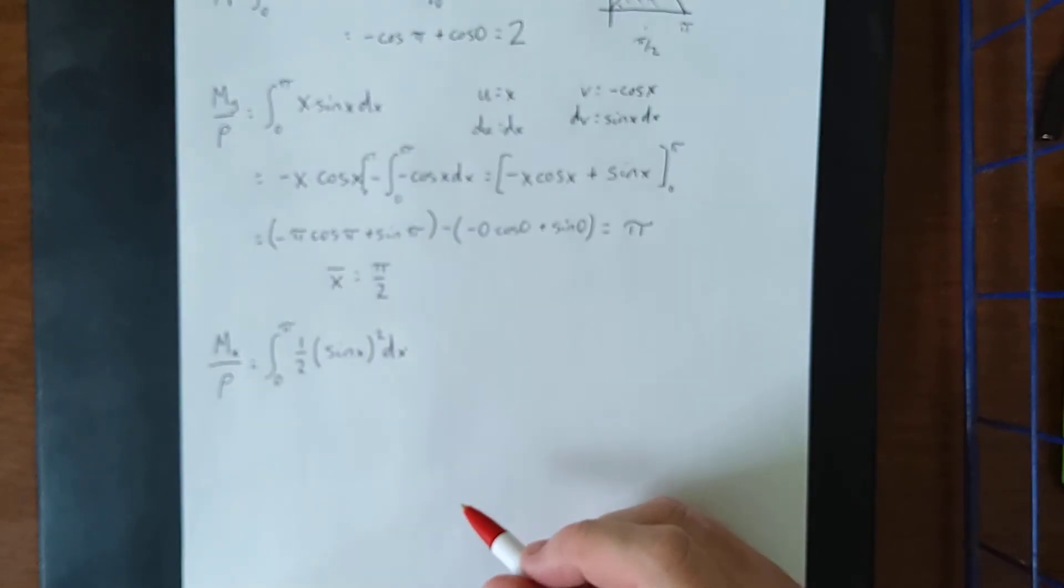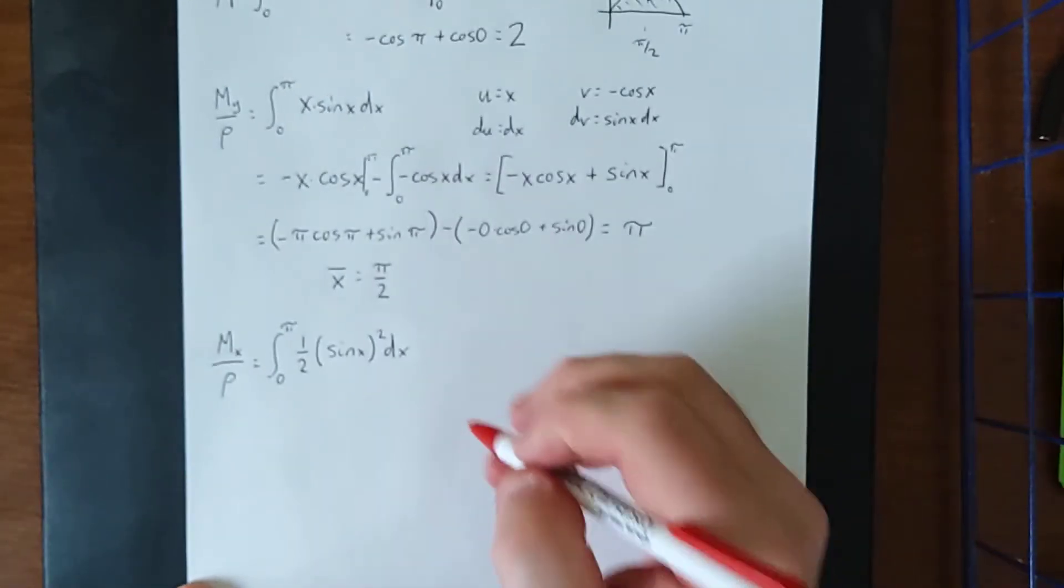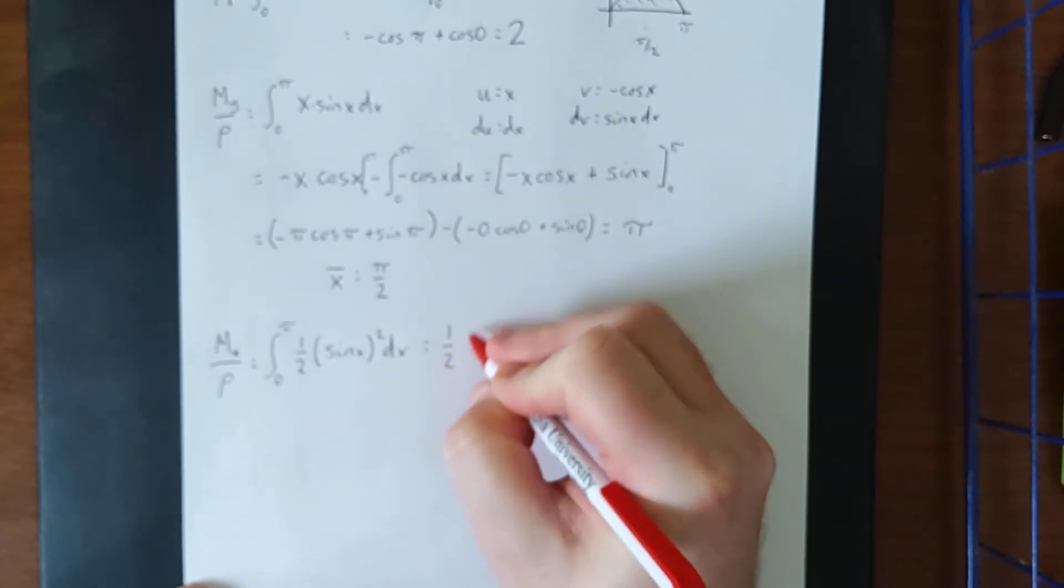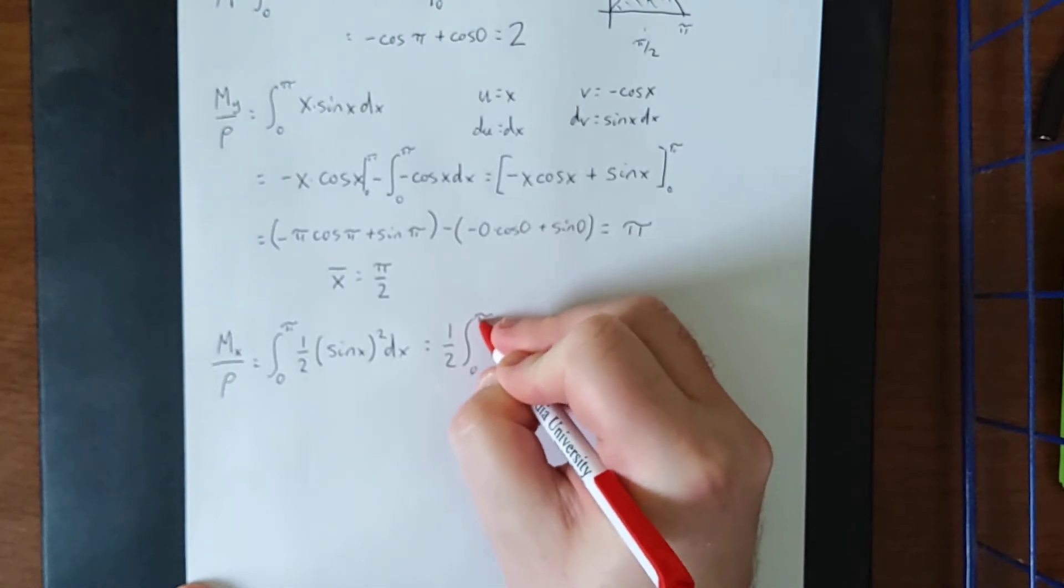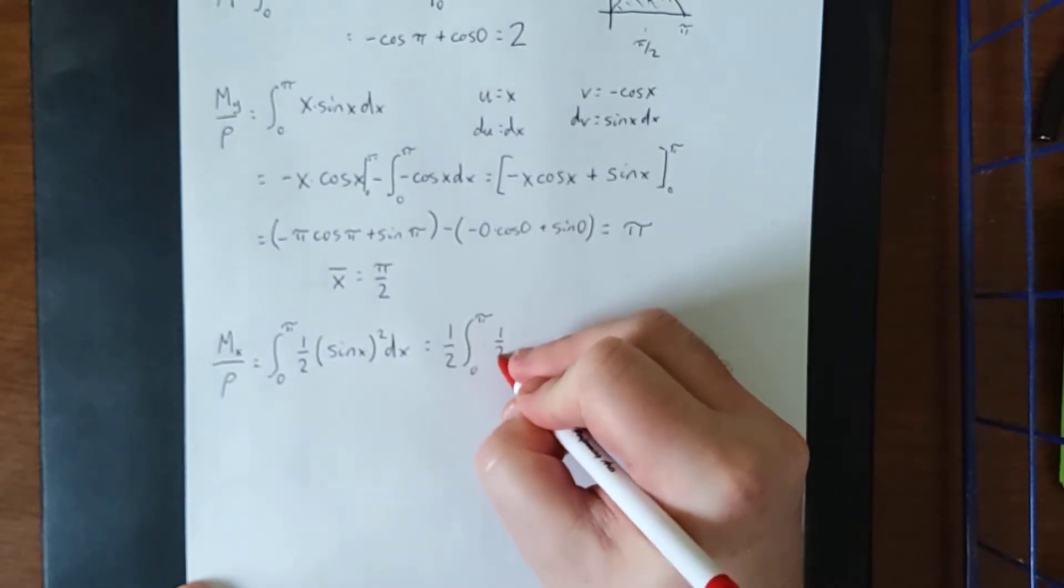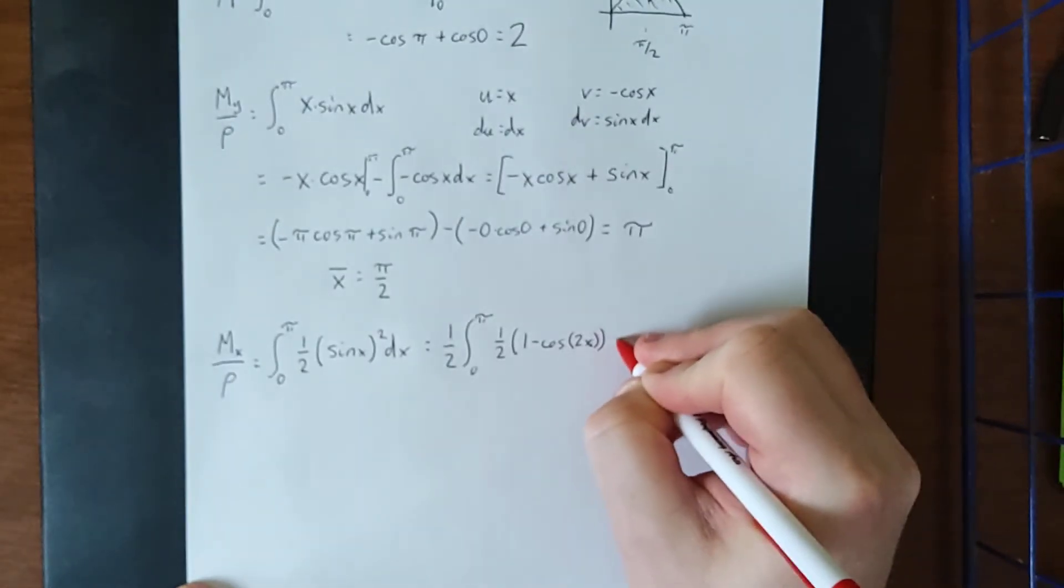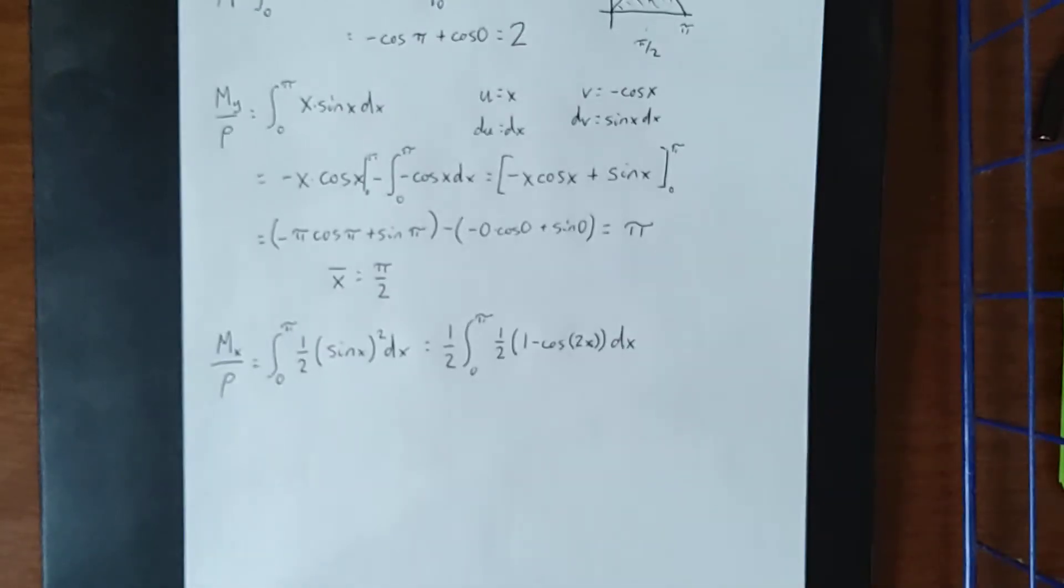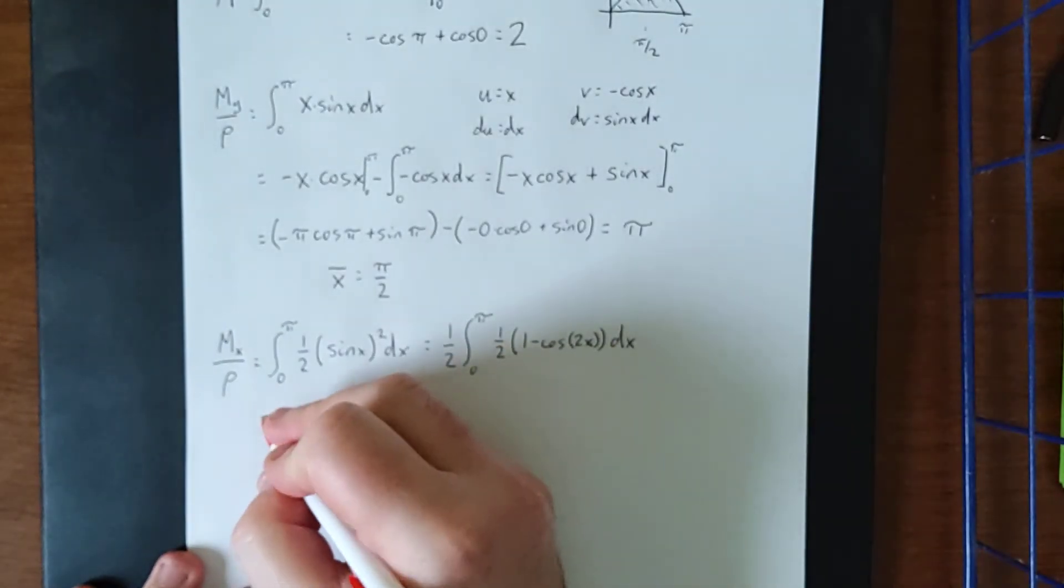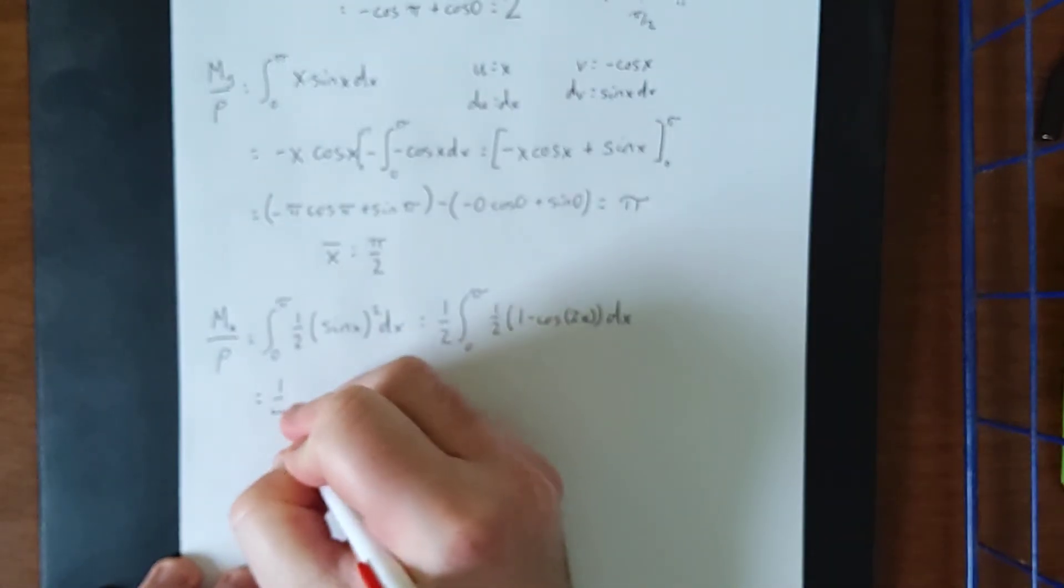Now in order for us to evaluate this, we are going to need a power reducing identity for the sine squared. We'll take the one half and move it outside of the integral. And then we'll apply the power reducing identity to the sine squared of x. That is one half times one minus the cosine of two x, giving us an extra factor of one half. So we'll take those two one halves and combine them into one single fraction, we'll call that one quarter.